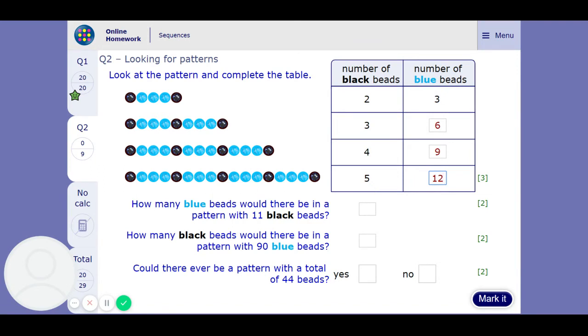So we can just count up in 3's until we get to 11. So 6 black beads would be 15, then 7 black beads would be 18, 8 black beads would be 21, 9 black beads would be 24, and 10 black beads would be 27, and 11 black beads, unless I'm mistaken, it would be 30 blue beads.